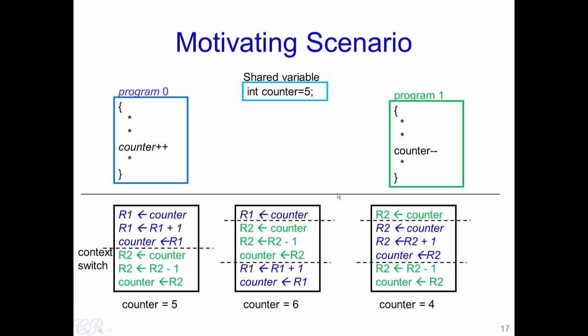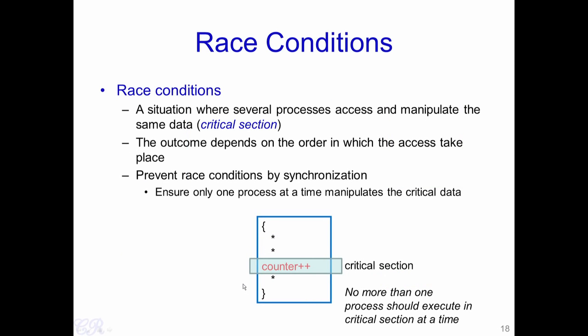This was an example of issues that occur with shared memory. Even with the simple operation of incrementing a counter in one place while decrementing it in another, the result can differ depending on how instructions get executed and how context switches occur. We define this scenario more formally by what is known as race conditions. A race condition is a situation where several processes access and manipulate the same data — this part of the process which accesses the shared data is known as a critical section.